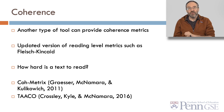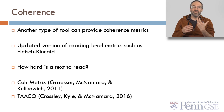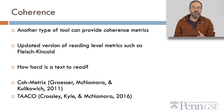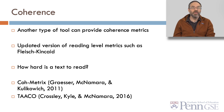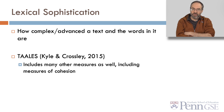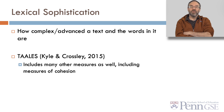Another type of tool provides coherence metrics, which is essentially an updated version of reading level metrics such as Flesch-Kincaid. These metrics try to answer the question: how hard is a text to read? One popular tool for this in classic NLP is Coh-Metrix, and another is TACO. People also look at lexical sophistication — how complex or advanced the words in a text are — and a popular tool for this is TAALES, which also includes many other measures including cohesion.